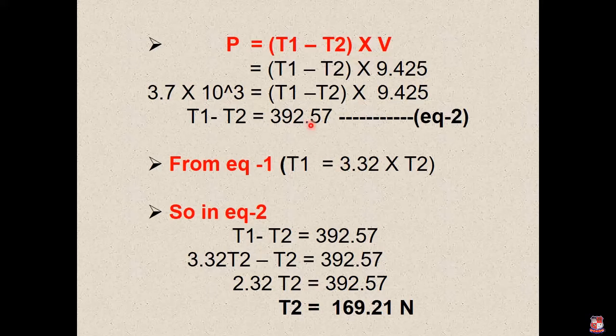So that's right. We have the equation. So T1 minus T2 is equal to 392.57. So divide to get T2. So T2 we will find, which is 169.21 Newton.